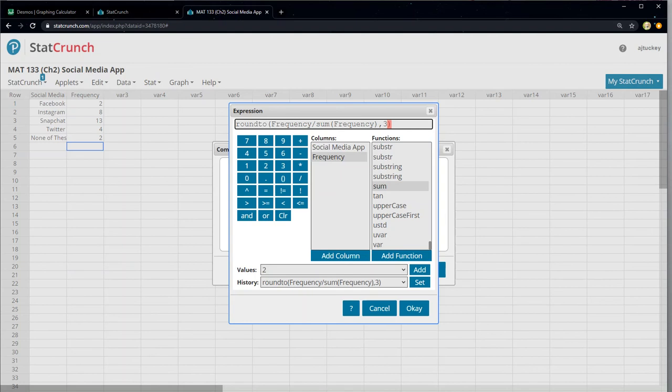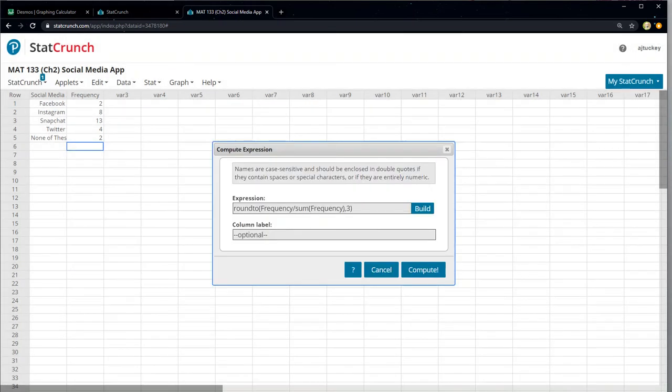Then I just want to tell it to round to three decimal places because I don't want all those decimals. Then I say okay and I say you're going to build this for me. I'm going to have it put in a column that I will title relative frequency and click compute.